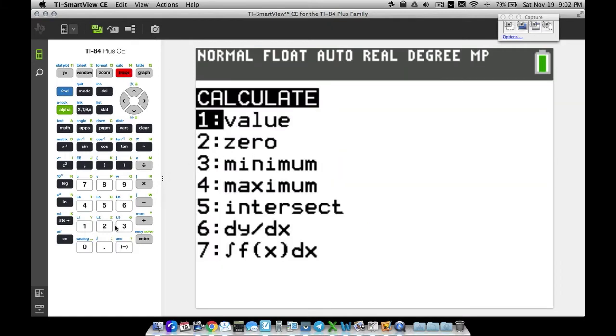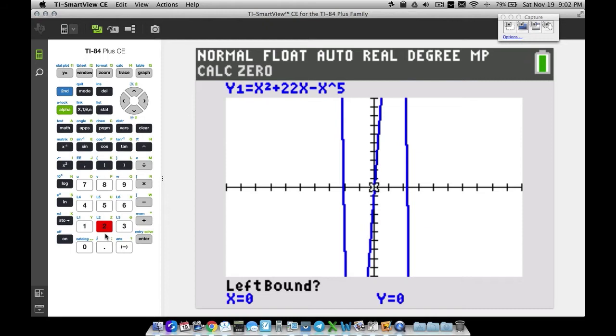Second trace, let's go to number two. So we're calculating the zero and what a lot of folks do is they just use the arrows to scroll around. We want to be to the left of this x-intercept, of this zero here. So if I press the left arrow on the calculator and I just keep going, this is not the way I prefer to do it all the time, but nonetheless I still do use it every once in a while.